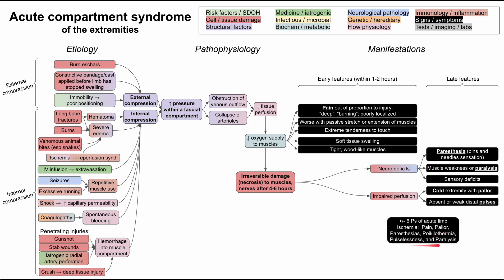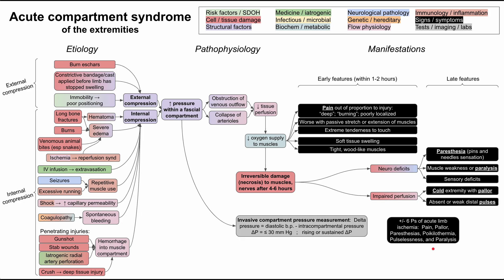The six Ps of acute limb ischemia serve as a useful guide when assessing for acute compartment syndrome: Pain, Pallor, Paresthesias, Poikilothermia (inability to regulate temperature, corresponding to the cold extremity), Pulselessness (weak distal pulses), and Paralysis. You don't necessarily see all six Ps, especially early in the course — this mnemonic is particularly useful for board exams — but don't exclude acute compartment syndrome if not all six are present.